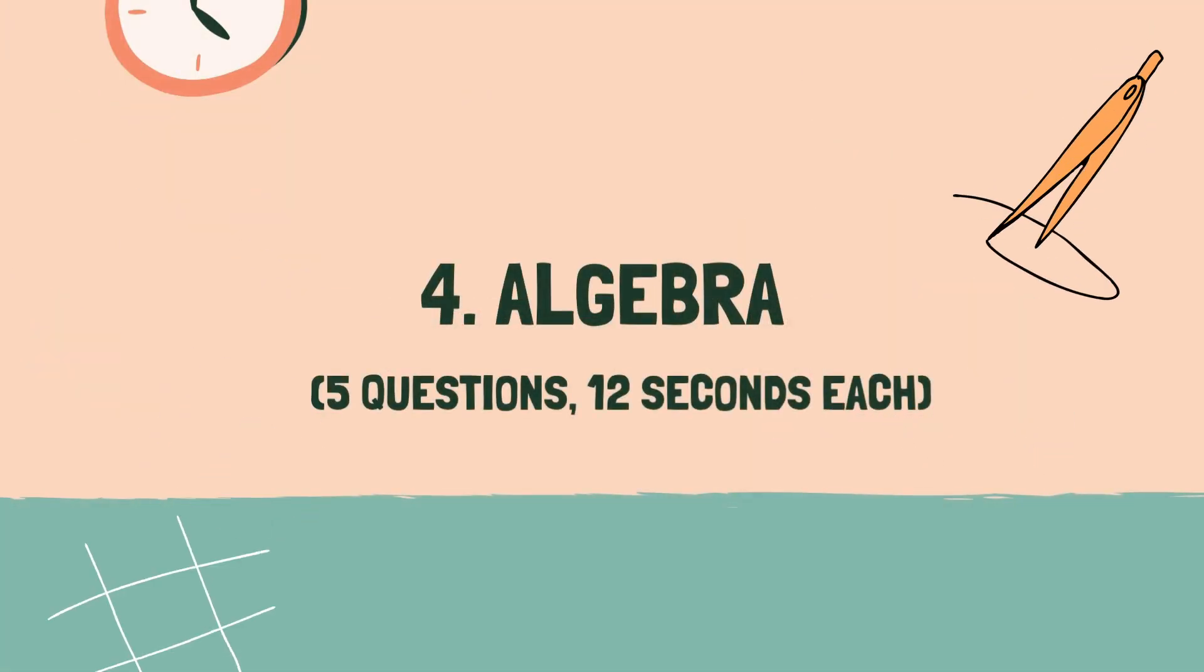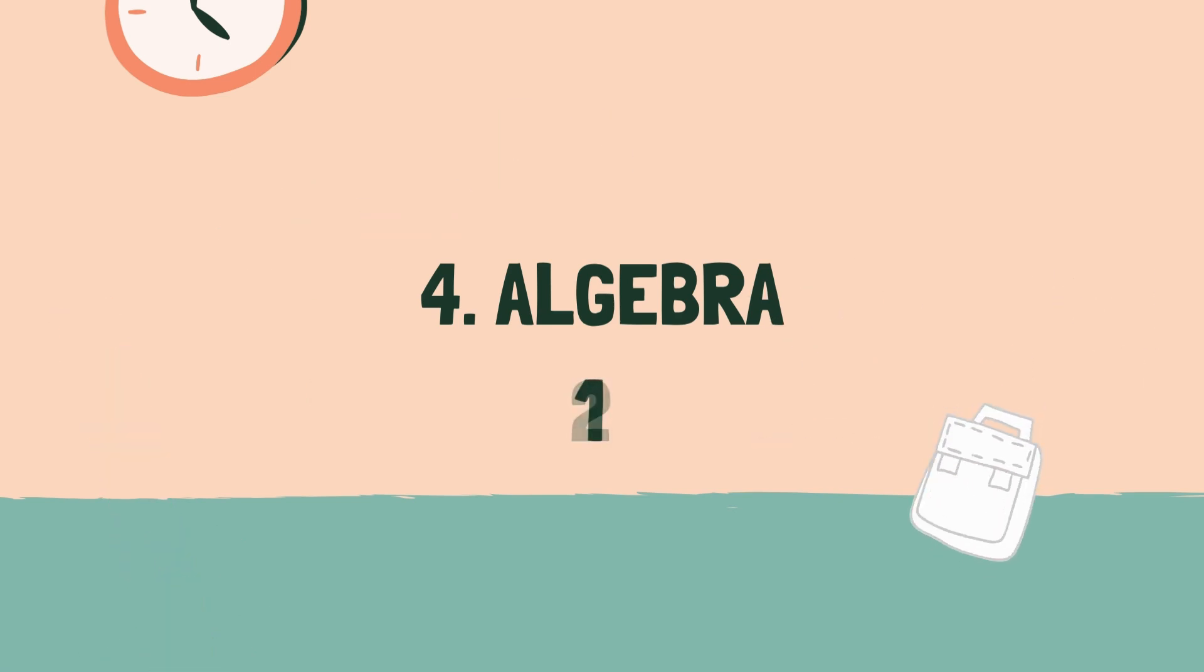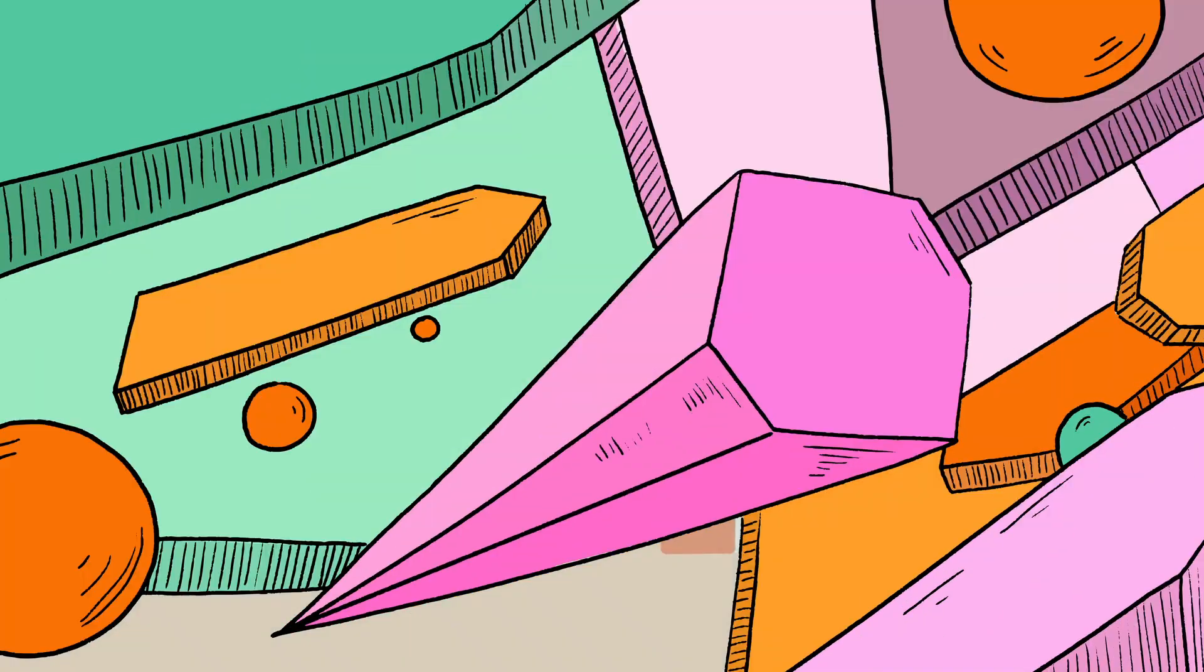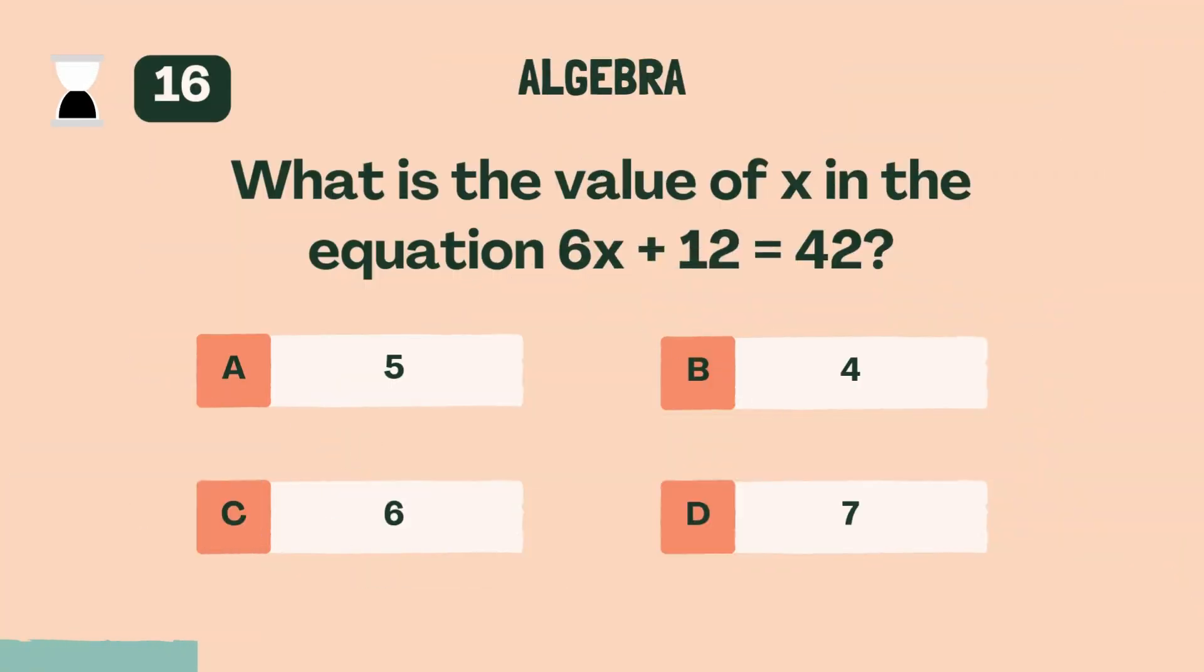Category four. Algebra. Three, two, one, go. What is the value of x in the equation 6x plus 12 equals 42?